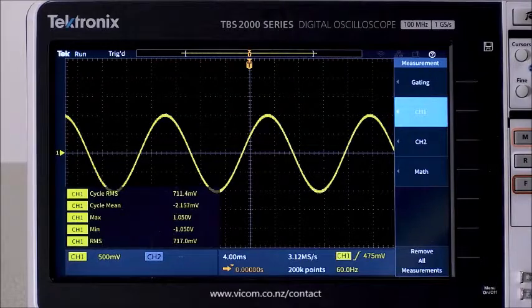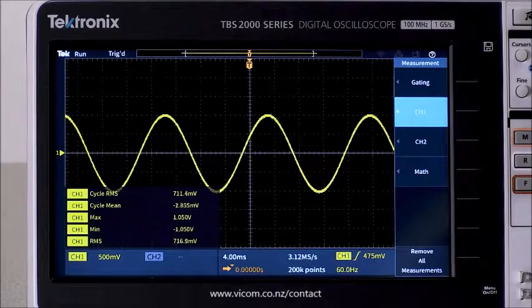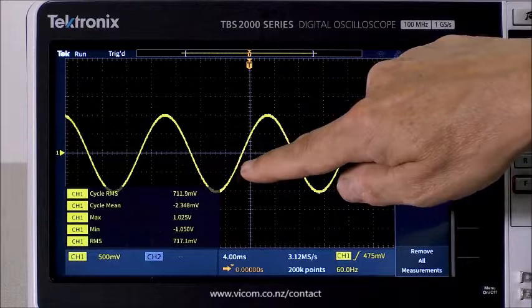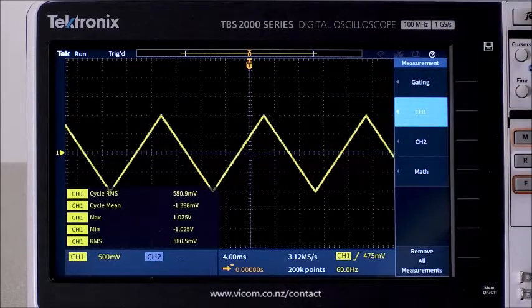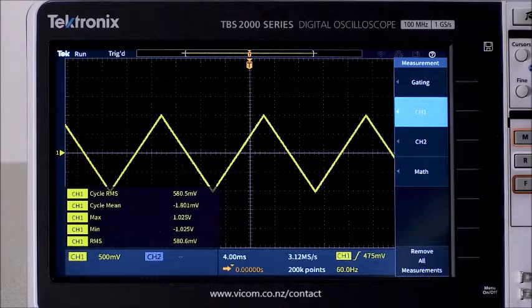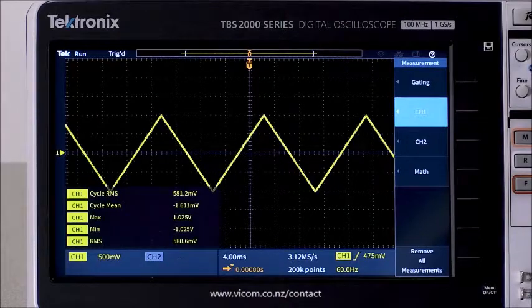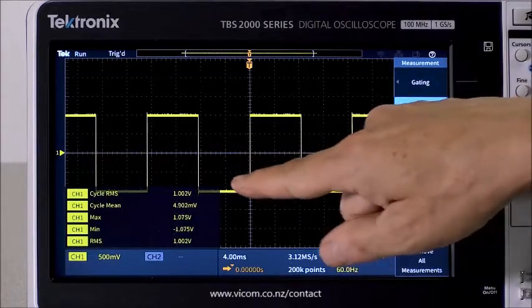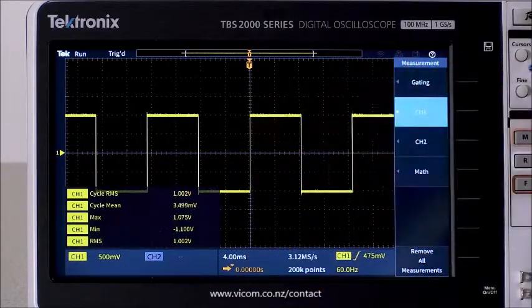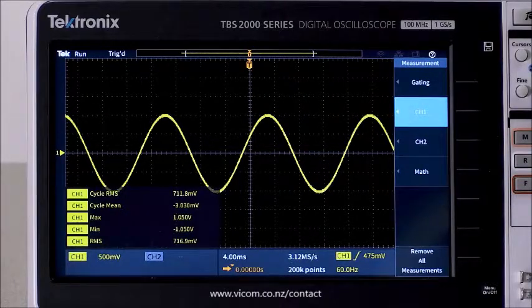So the amplitude or max is one volt. And for a pure sine wave with no offset, the RMS value is always going to be around 70% or 71% of the peak. For a triangle wave, the RMS value will be around 58% of the peak. And if we look at a square wave, a square wave cycle RMS or RMS will be about the same as the peak voltage.